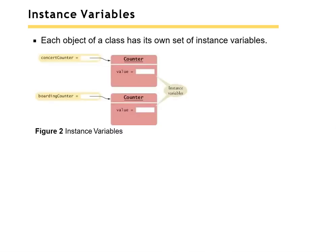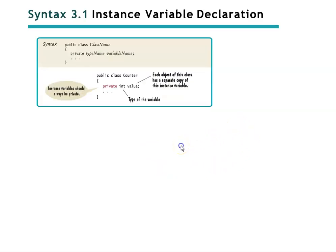Each instance of an object has its own set of instance variables. So if you have two objects — in this case a concert counter and a boarding counter — their values will be completely separate and distinct. This is important because it gives each object the concept of identity. So how do we declare an instance variable? We always want to make them private. That's not required but it's really bad programming practice not to do so. Each object of the class would have a separate instance of this variable, and you want to control access.